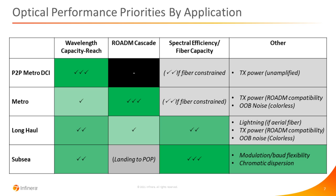In terms of those optical performance characteristics, different characteristics are more important for different applications. For point-to-point metro DCI, the most important is typically wavelength capacity reach. For metro networks, ROADM cascade is a key metric. Long haul is typically a balance between wavelength capacity reach and spectral efficiency. For subsea, given the high cost of those subsea fibers, spectral efficiency and fiber capacity tend to be most important, though wavelength capacity reach can also be important, and there are other parameters that can matter on a case-by-case basis.